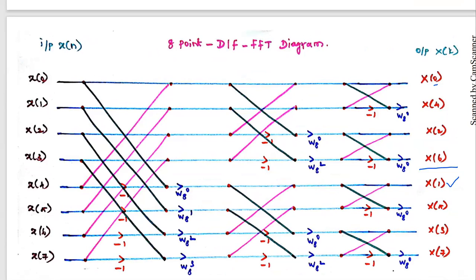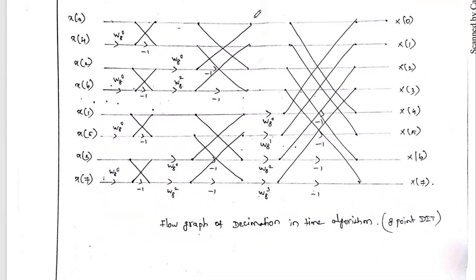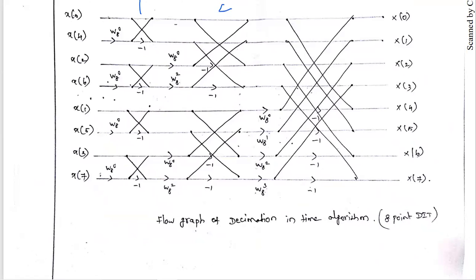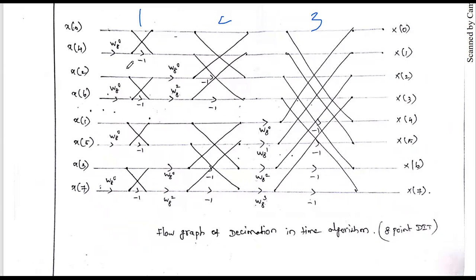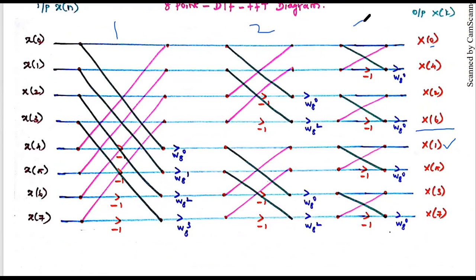After getting the output you have to rearrange and write the capital X(k) values. Another difference between DIT and DIF is the stage structure. Both have three stages since eight equals two to the power three. In the DIT algorithm, the first stage uses two-point butterflies, second stage four, and third stage eight. But in the DIF algorithm it is reversed: first stage uses eight connections, second stage four, and the third stage uses two-point butterflies.